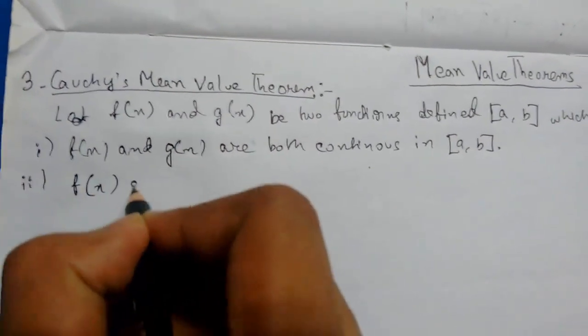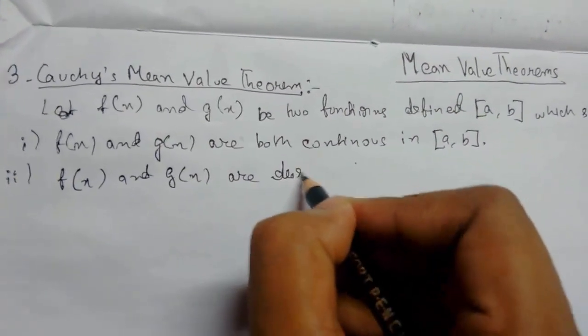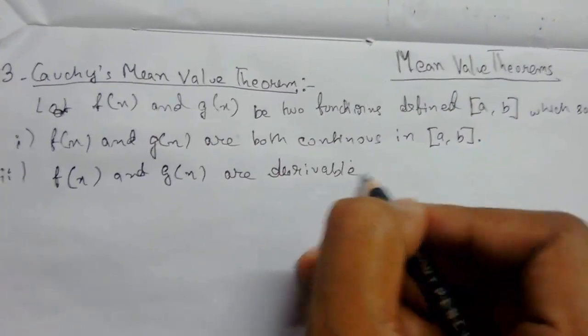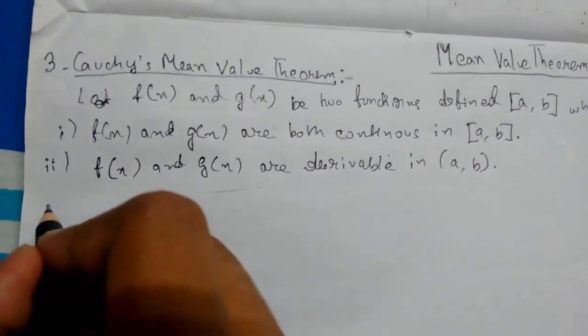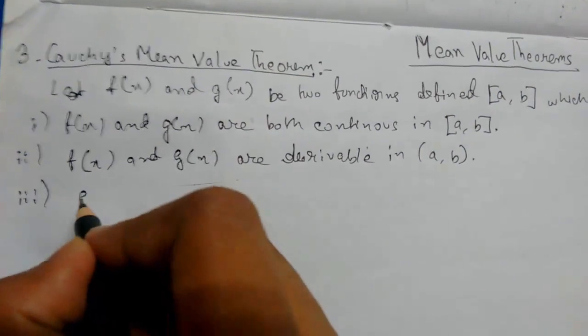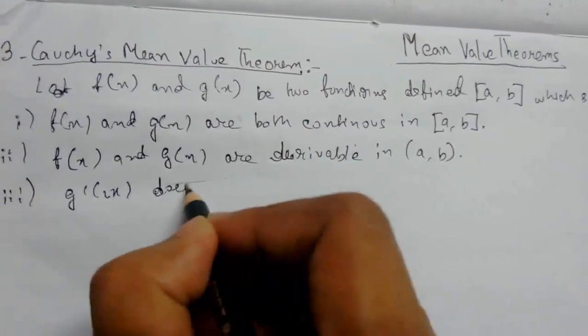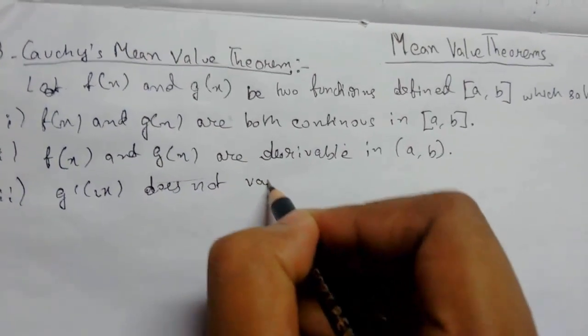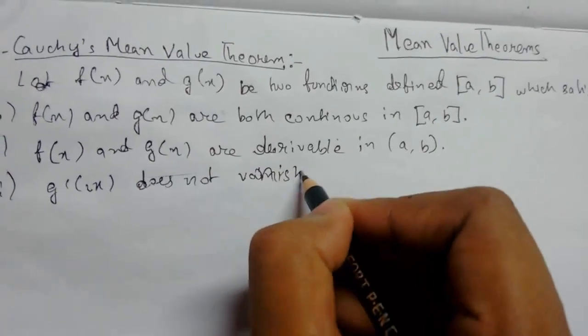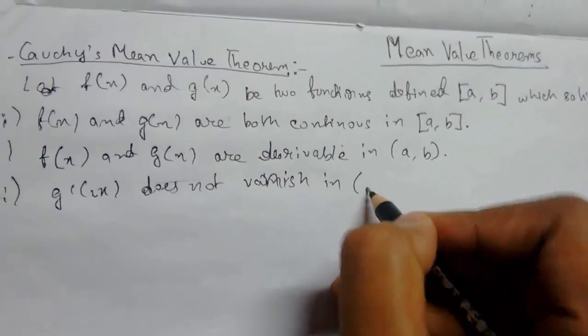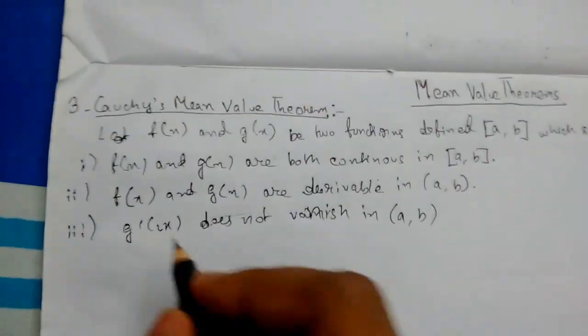And the third condition is g dash of x does not vanish in the open interval (a, b). So from there we can conclude that then there exists at least one value of c, where c belongs to a < c < b.